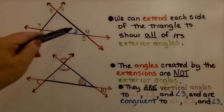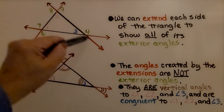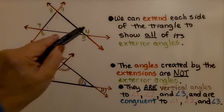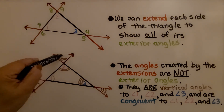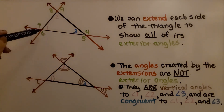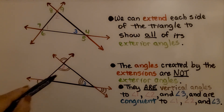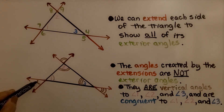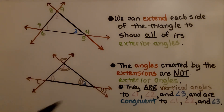Here we have a triangle with angles one, two, and three. We can extend each side of the triangle to show all of its exterior angles. We have our three interior angles, then angles four, five, six, seven, eight, and nine as exterior angles. The angles created by the extensions on the far side are not exterior angles — those angles in between are not exterior angles. The ones formed by the extensions out here are vertical angles: this one is vertical to angle one, this is vertical to angle two, this one is vertical to angle three. They are congruent to angles one, two, and three respectively, but they are not exterior angles.